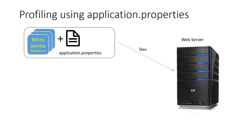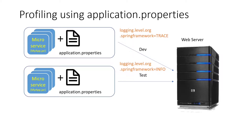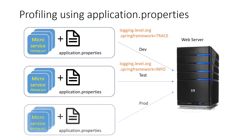Consider you have a web server and a microservice with application properties embedded inside myapplication.jar. For example, if you want logging level trace in the dev environment, you update the application properties and deploy it to dev server. For sit environment you need logging level info, and for production you need logging level debug. So basically you will have three different jars for three different environments, which is not correct.